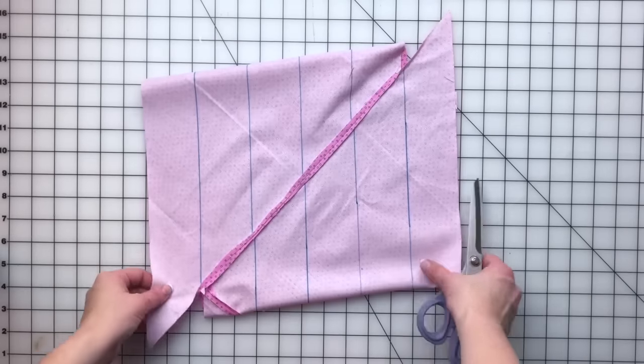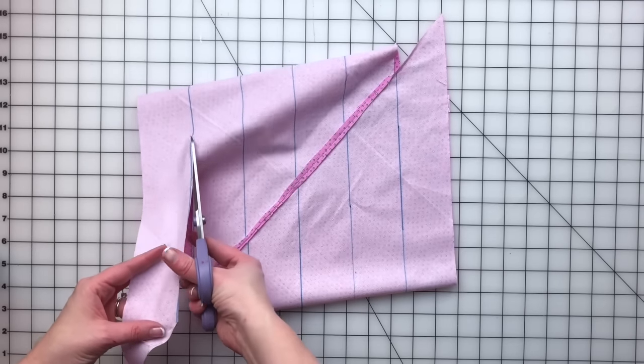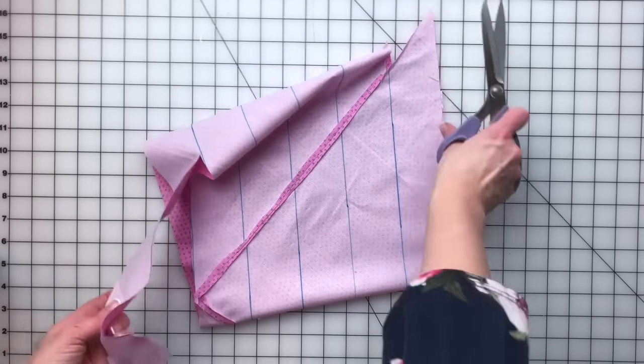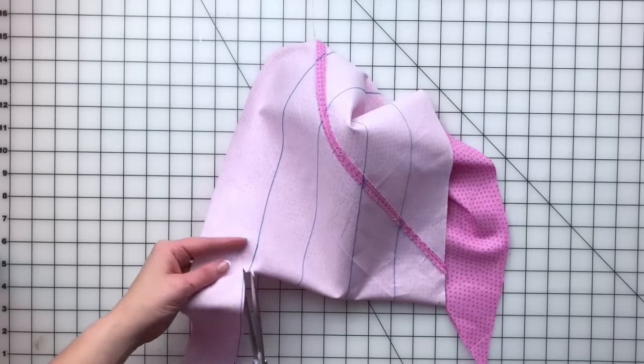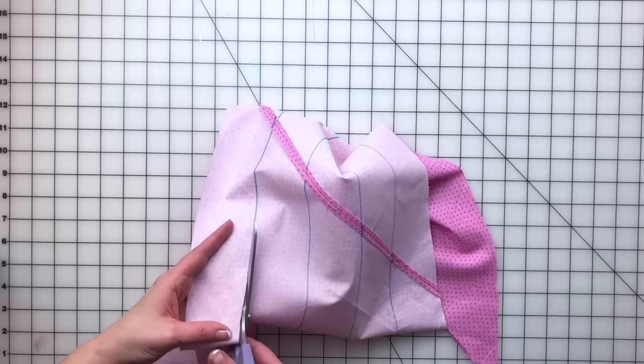And here comes the magic. All you have to do is cut along your line. I hope you cut straighter than this. And you will have one long continuous piece of bias trim.